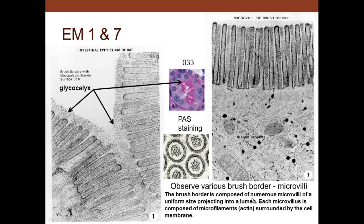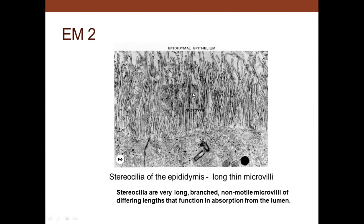The brush border is composed of numerous microvilli of uniform size projecting into the lumen. Each microvillus is composed of actin microfilaments surrounded by the cell membrane, with the glycocalyx — which is PAS-positive staining — located on the outside as a fuzzy coat. Stereocilia are found in the epididymis and ductus deferens — very long, non-motile microvilli that increase absorption from the lumen.